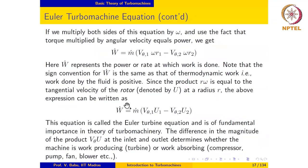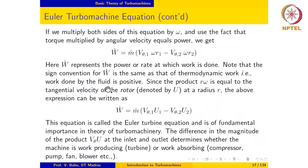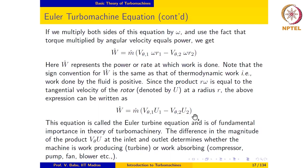If we multiply both sides of the torque equation by omega, T times omega is the rate at which work is done, i.e., power. So the power equals M-dot times (Vθ1·ω·r1 minus Vθ2·ω·r2). Notice that ω·r1 is the blade velocity U1 and ω·r2 is the blade velocity U2. So we write this as M-dot times (Vθ1·U1 minus Vθ2·U2). This equation is called the Euler turbine equation and is of fundamental importance in turbo machinery theory.